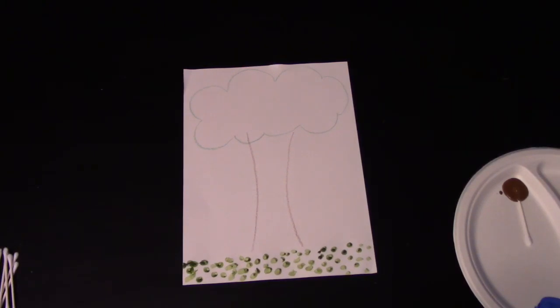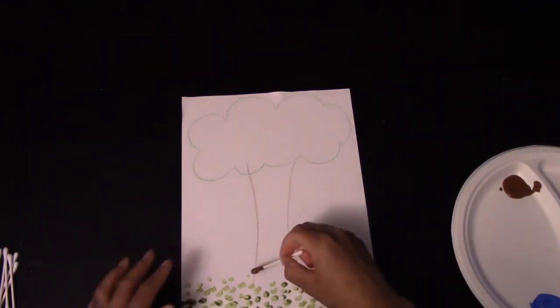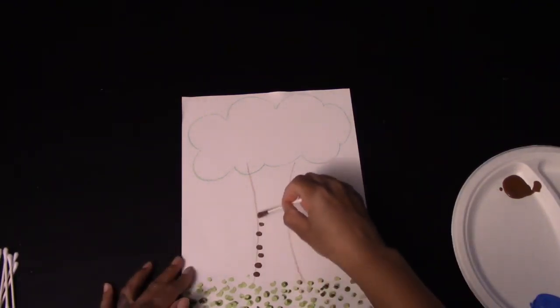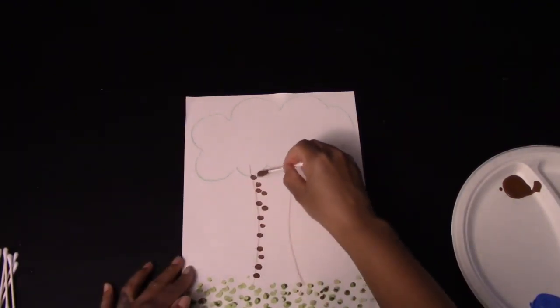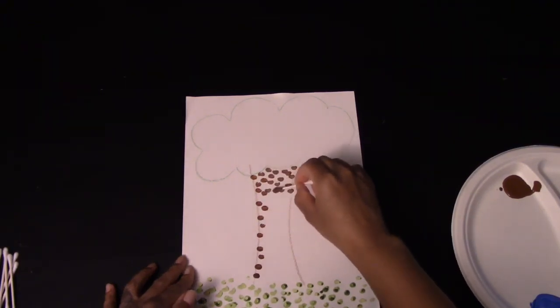Next, you're going to take your brown paint, dip your Q-tip in it, and you're going to follow along the brown outline that you drew. Once you complete the outline, you can go ahead and fill it in with your dots.